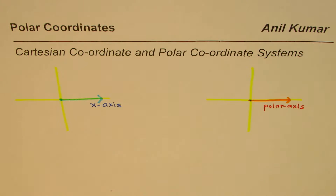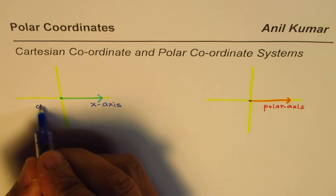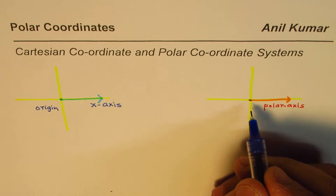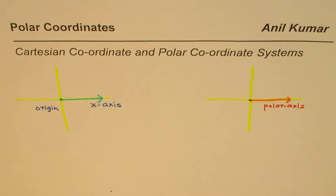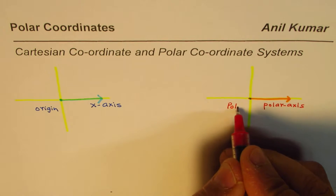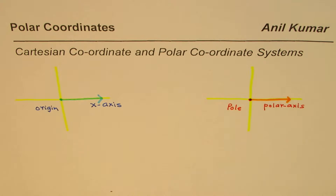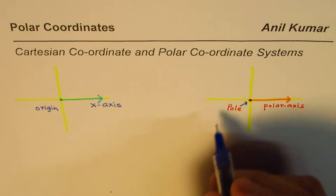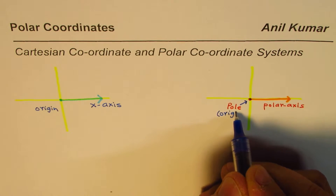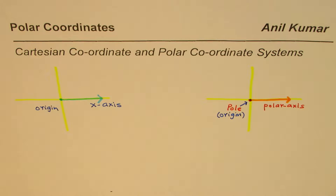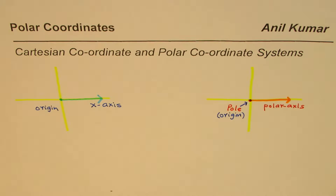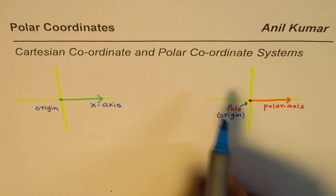Origin is a common term we can use in both systems. In polar coordinates we also have an origin, but we give it a special name — we call it the pole. So this point is referred to as the pole, or as the origin at times. Strictly speaking, it is analogous to the origin of the Cartesian coordinate system. The X axis parallel in polar coordinates is the polar axis.